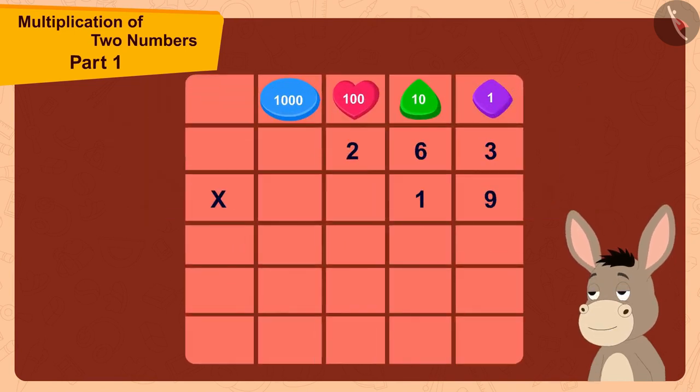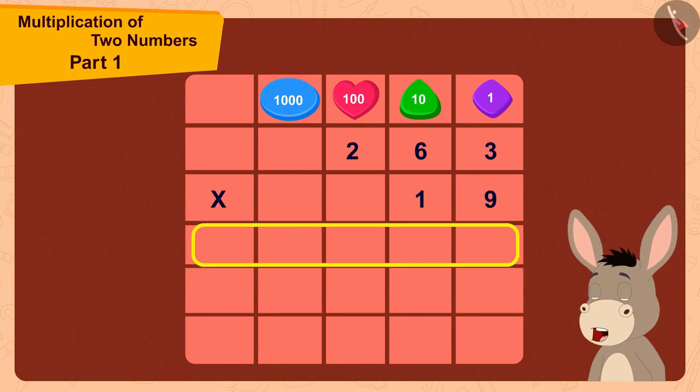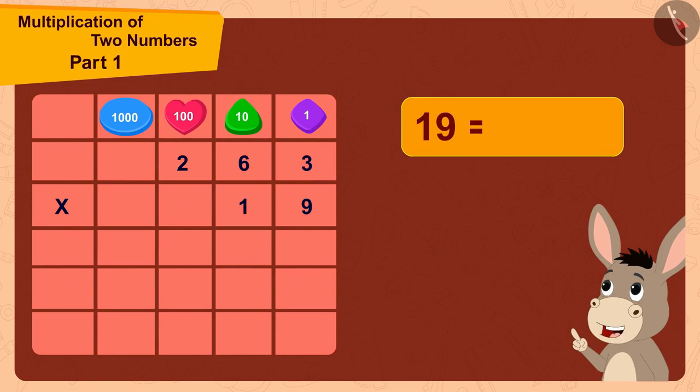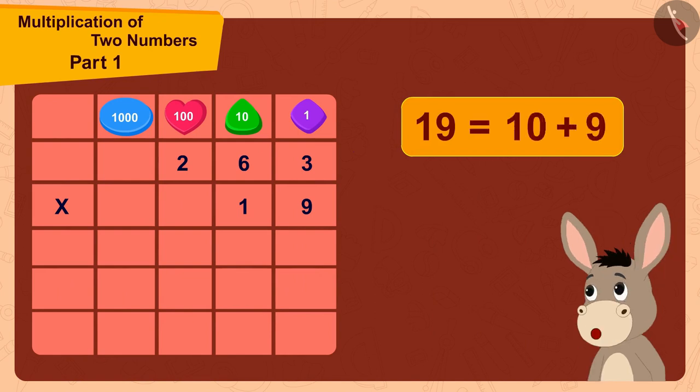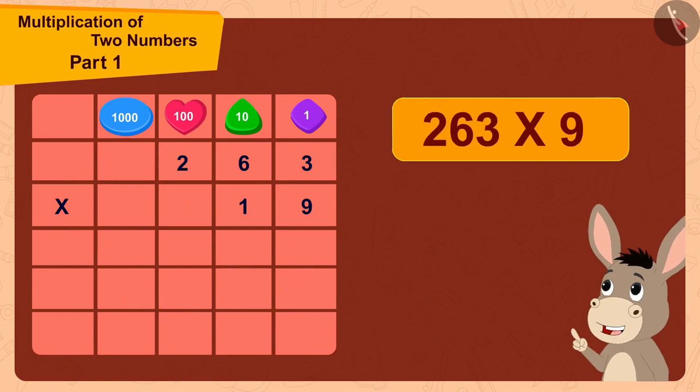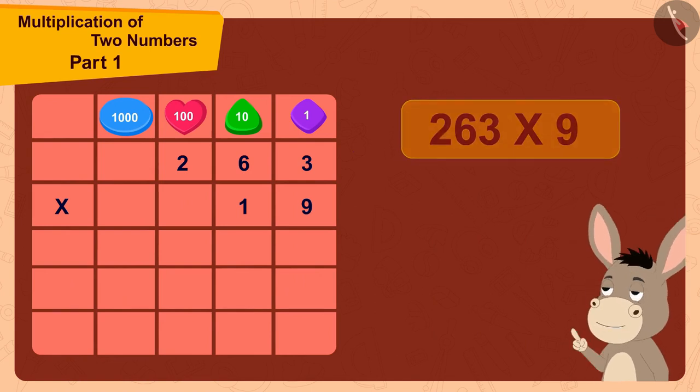I can write 19 by adding 10 and 9. So, first I will multiply 263 with 9. Then, I will multiply 263 with 10.